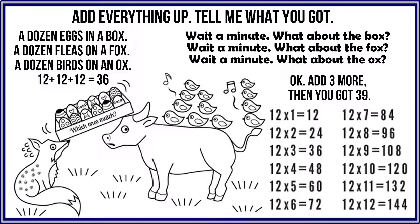12 times 1 is 12. 12 times 2 is 24. 12 times 3 is 36. 12 times 4 is 48. 12 times 5 is 60. 12 times 6 is 72. 12 times 7 is 84. 12 times 8 is 96. 12 times 9 is 108. 12 times 10 is 120. 12 times 11 is 132. 12 times 12 is 144. Add everything up.